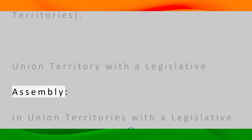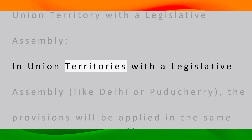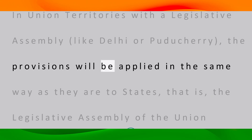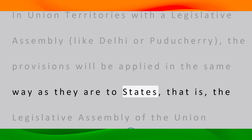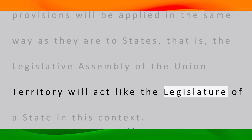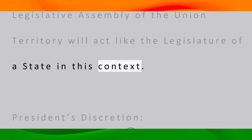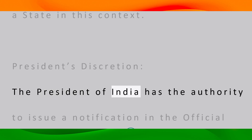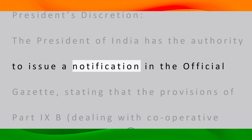In union territories with a legislative assembly, like Delhi or Puducherry, the provisions will be applied in the same way as they are to states. That is, the legislative assembly of the union territory will act like the legislature of a state in this context.